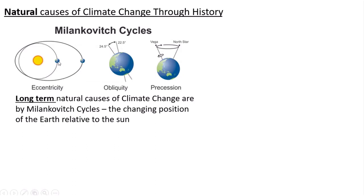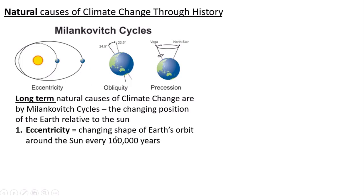Every 100,000 years or so, the Earth's orbit shifts from a more circular orbit — where it's a bit warmer — to a more elliptical one, where it can be a bit colder. That ties in nicely with those interglacials and glaciated periods, as every 100,000 years is the average time an ice age lasts.